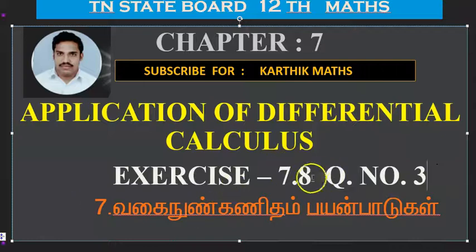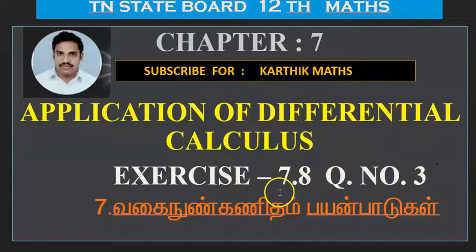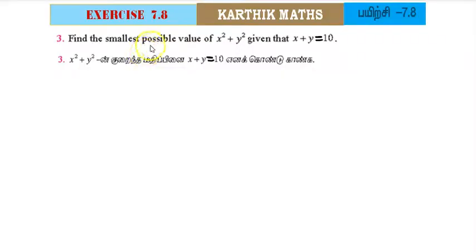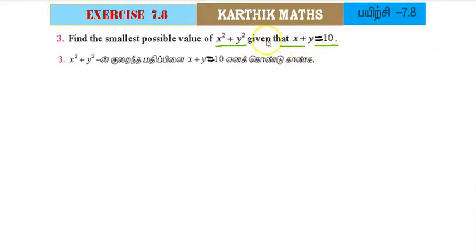Chapter 7, Exercise 7.8, Question Number 3. Find the smallest possible value of x² plus y², given that x plus y equals 10.